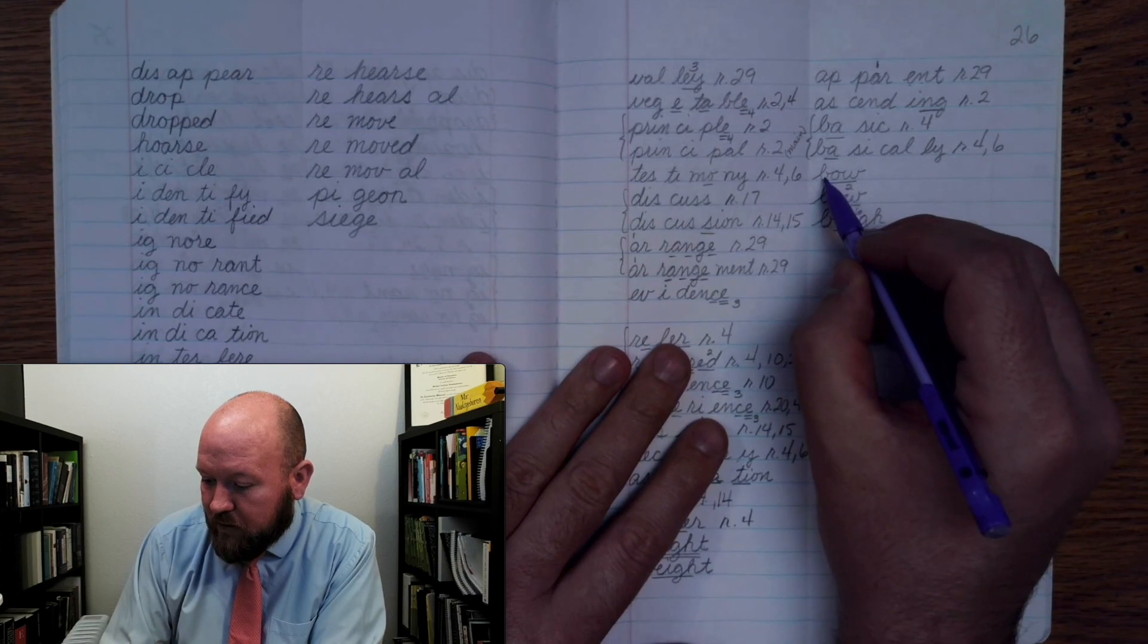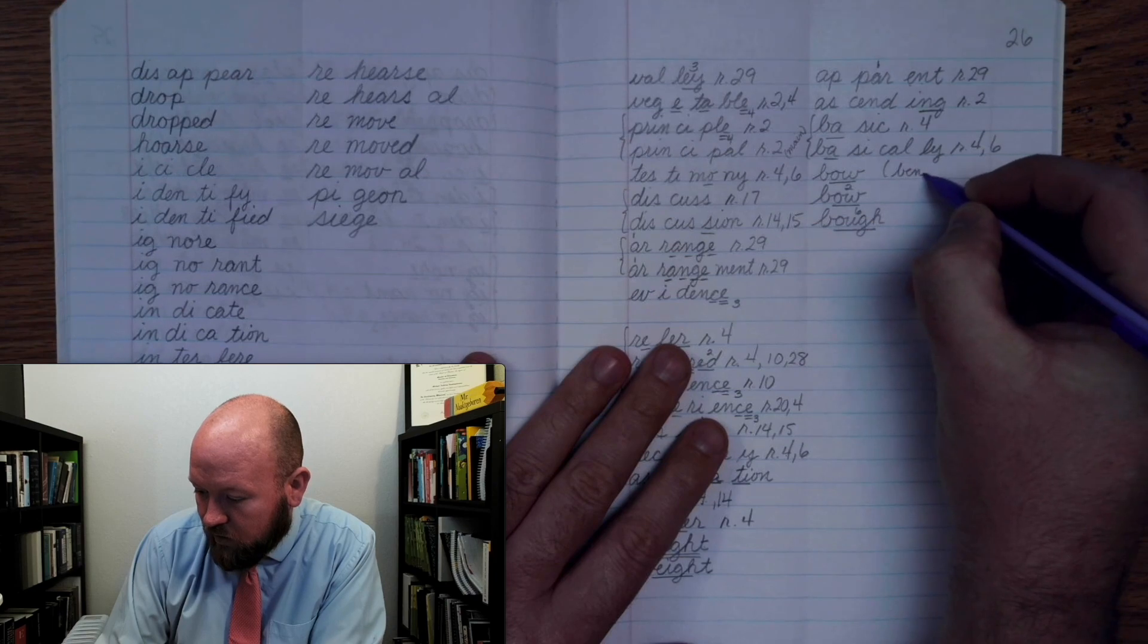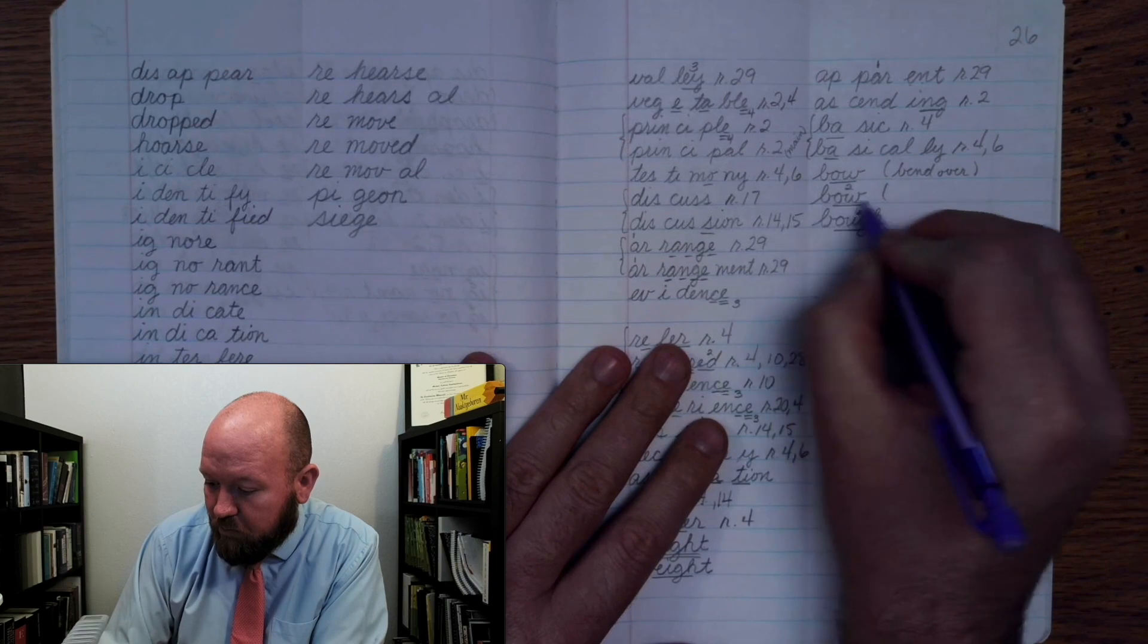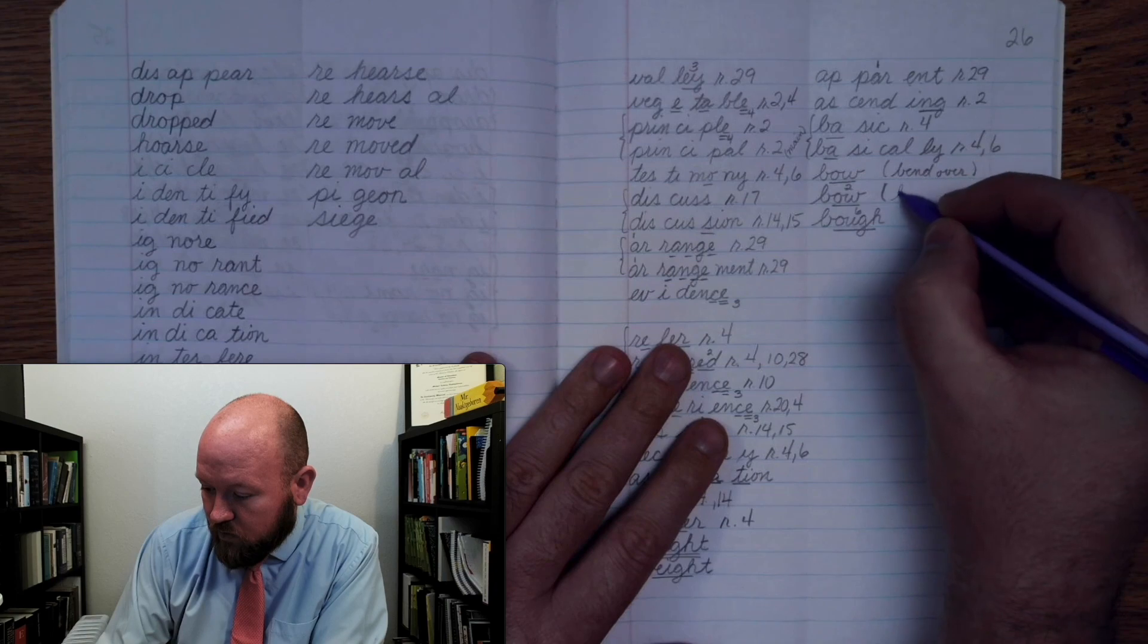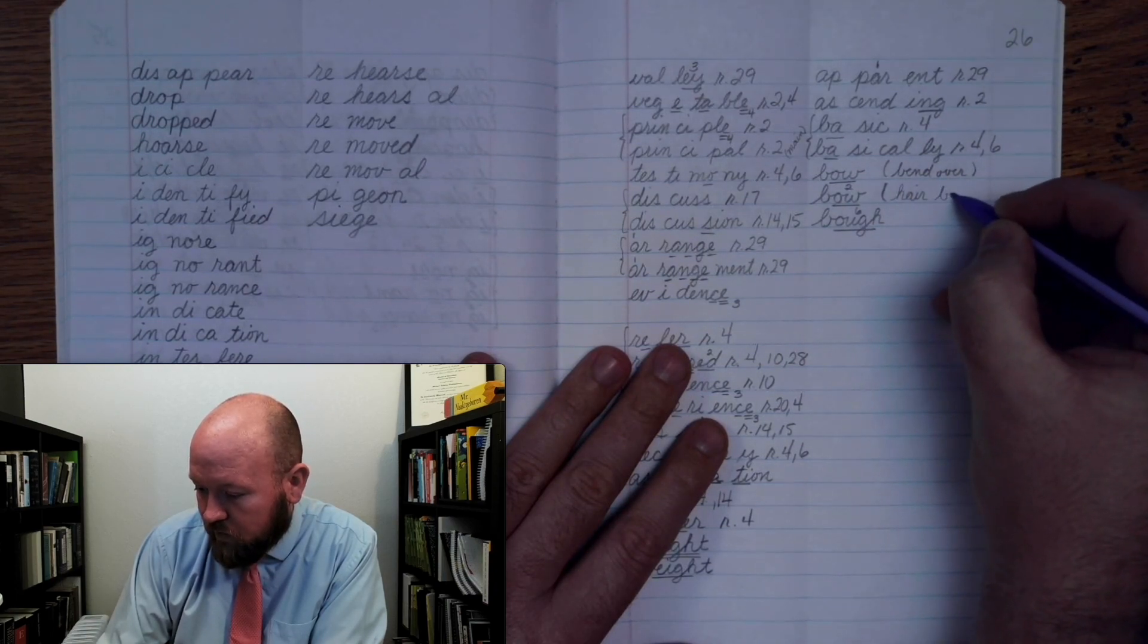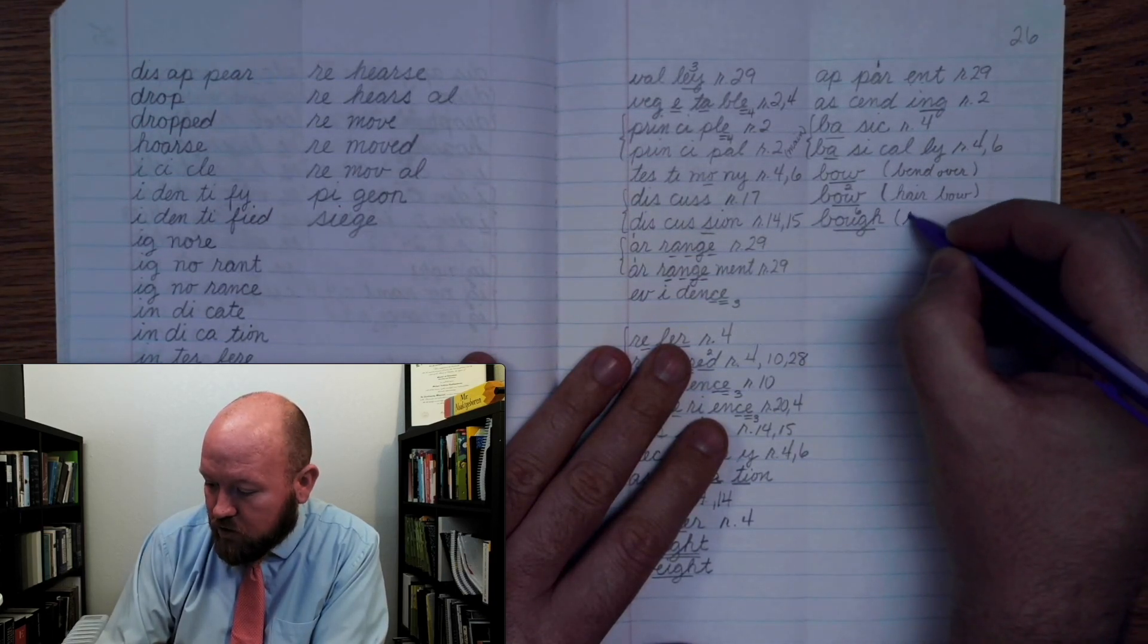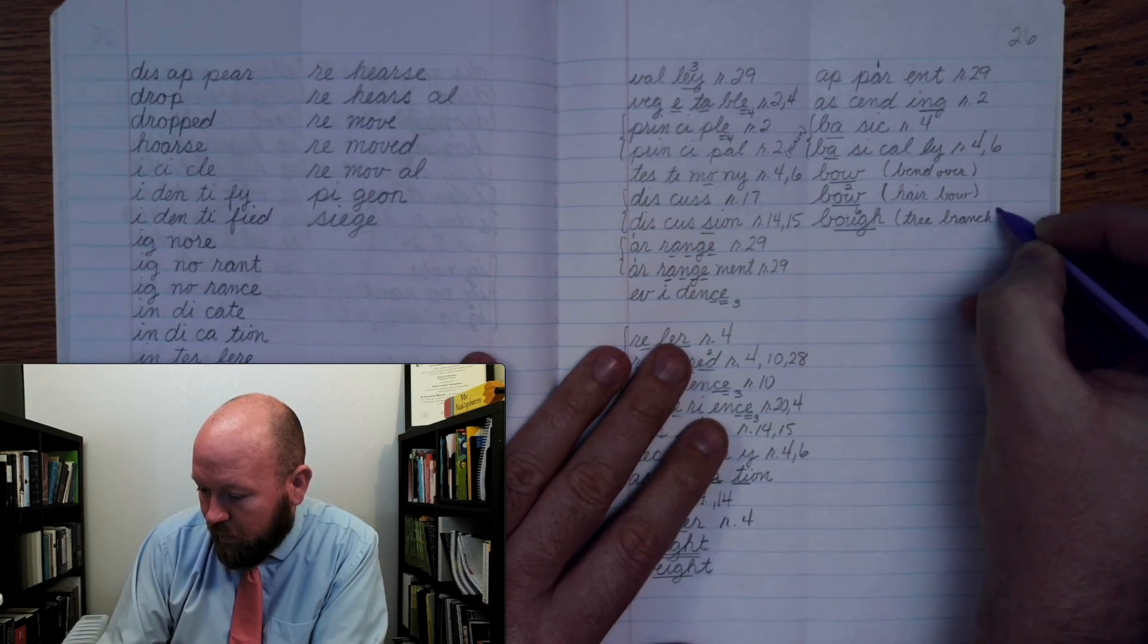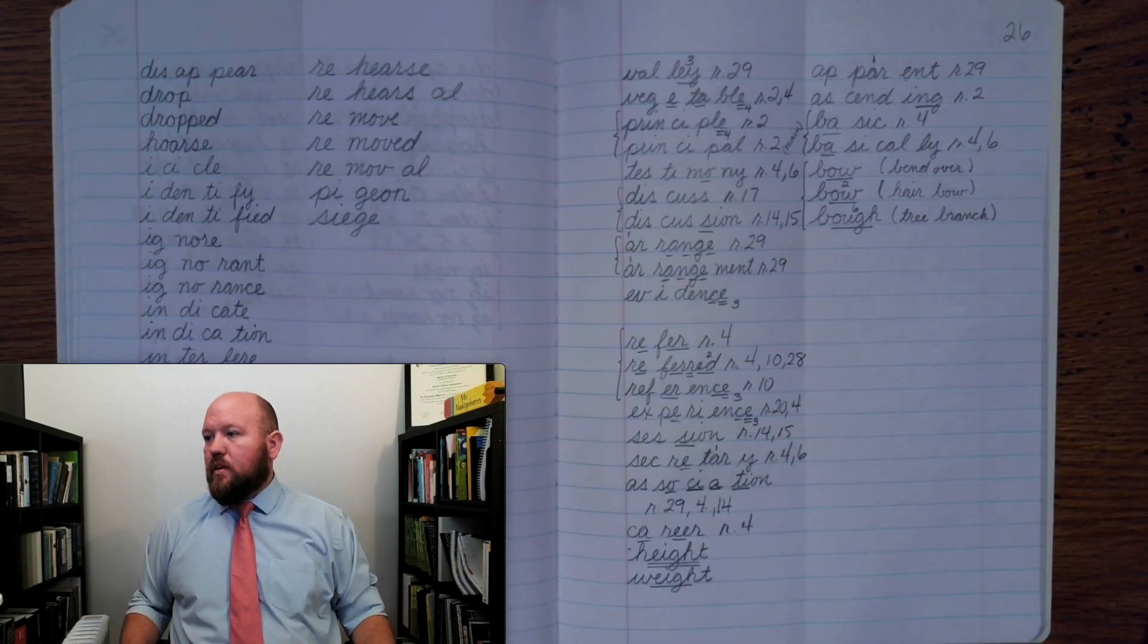All right? So this is bow, like bend over. This is bow, like a hair bow or a rainbow, and this is bow, a tree branch. All right, brace those.